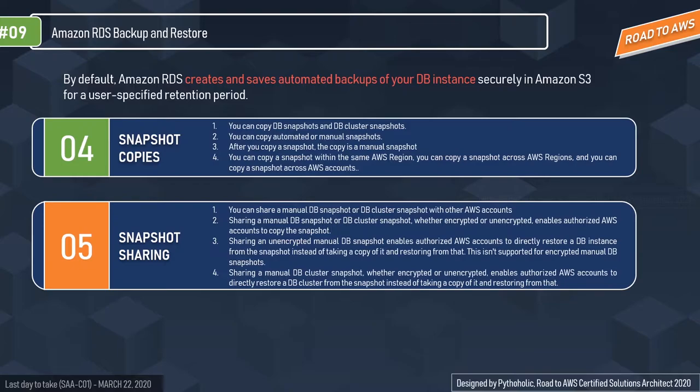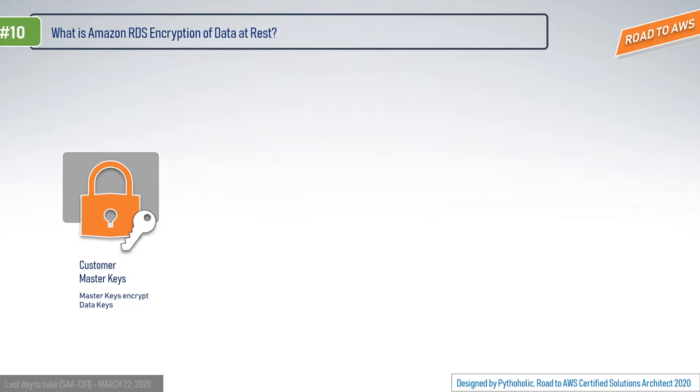If you have authorized an AWS account to create a snapshot from a manual snapshot you have already shared, they don't have to take a copy of it and restore from it — they can do it directly. Now let's discuss Amazon RDS encryption of data at rest, which is very important and will surely come in the exam.